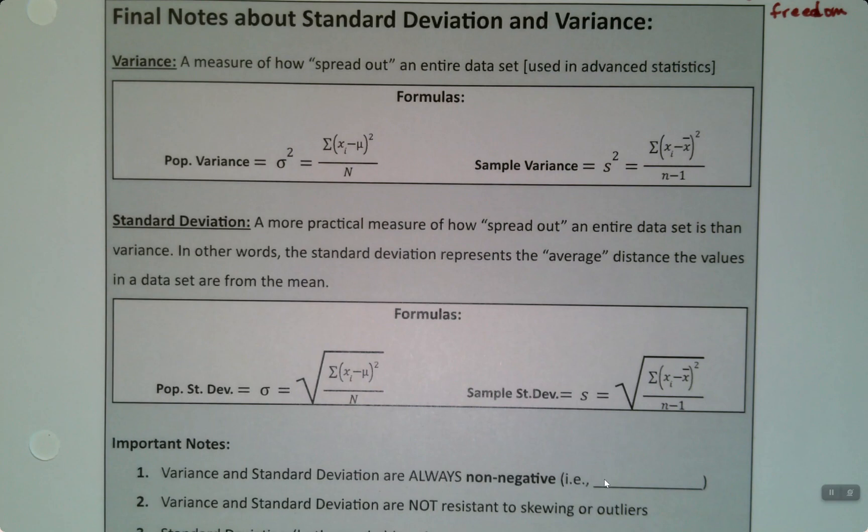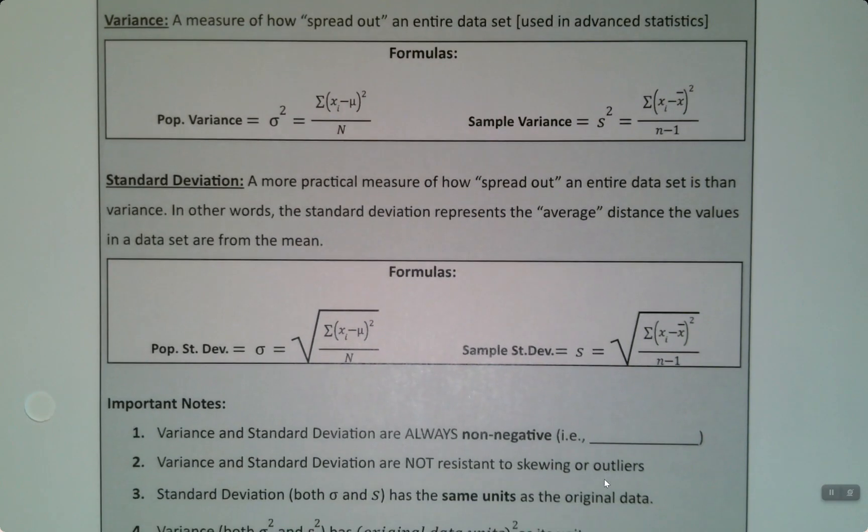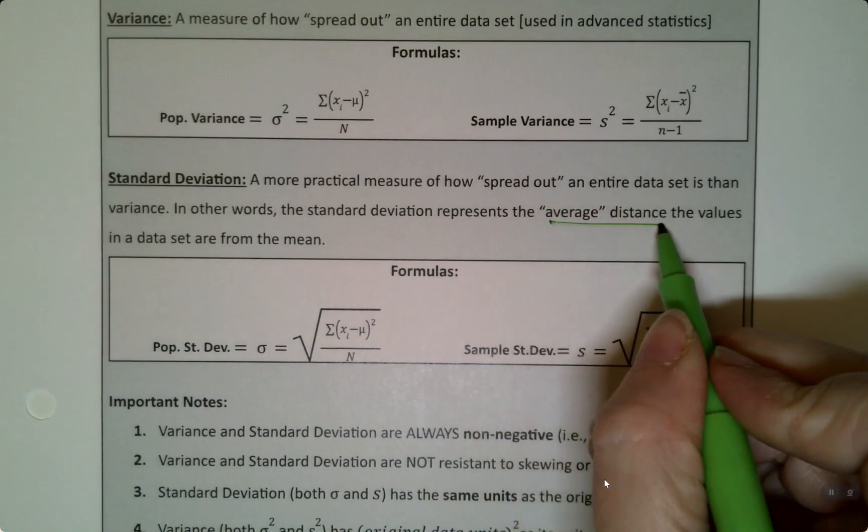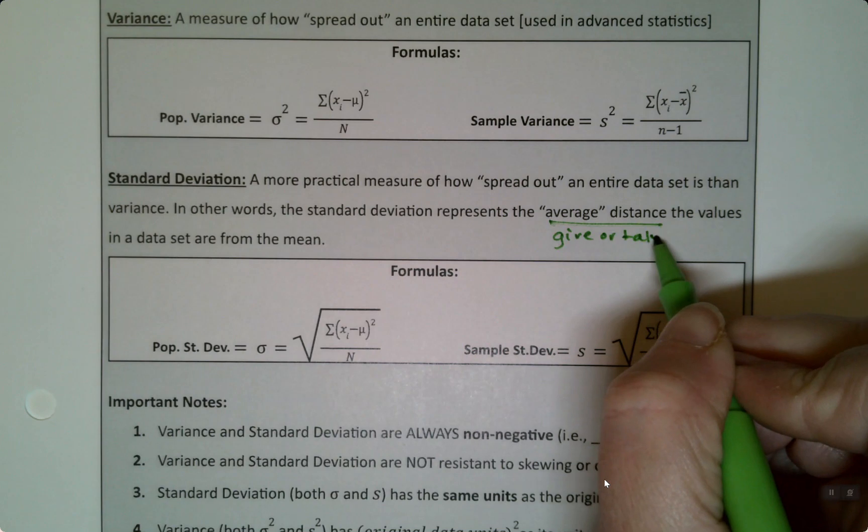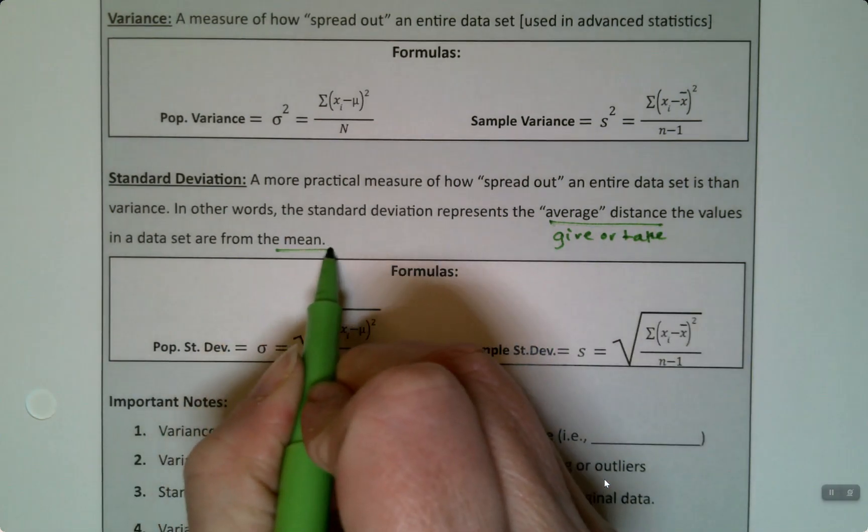So standard deviation is a more practical measure of how spread out our data set is. It's the one that we use. And it's especially thought of as the average distance, in other words, the give or take from the mean, which is the center.